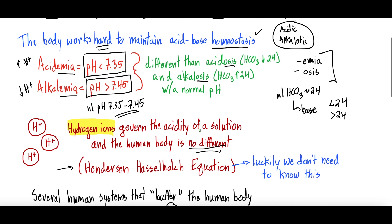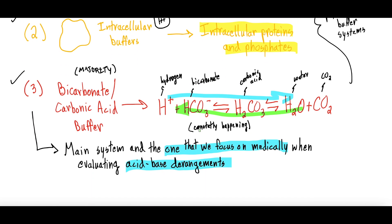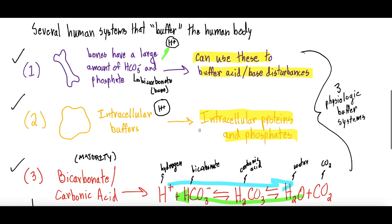That's the summary of video one — introducing the buffering systems, what drives acidity and alkalinity, the definitions of acidemia, alkalemia, acidosis, and alkalosis, and the main equation the body uses to buffer acid-base status. We'll be releasing a series of videos with increasing complexity — follow them in sequential order to build a solid grasp on acid-base disorders in medicine. It's critical for patient care, commonly asked about, and pertinent to nearly every patient encounter.